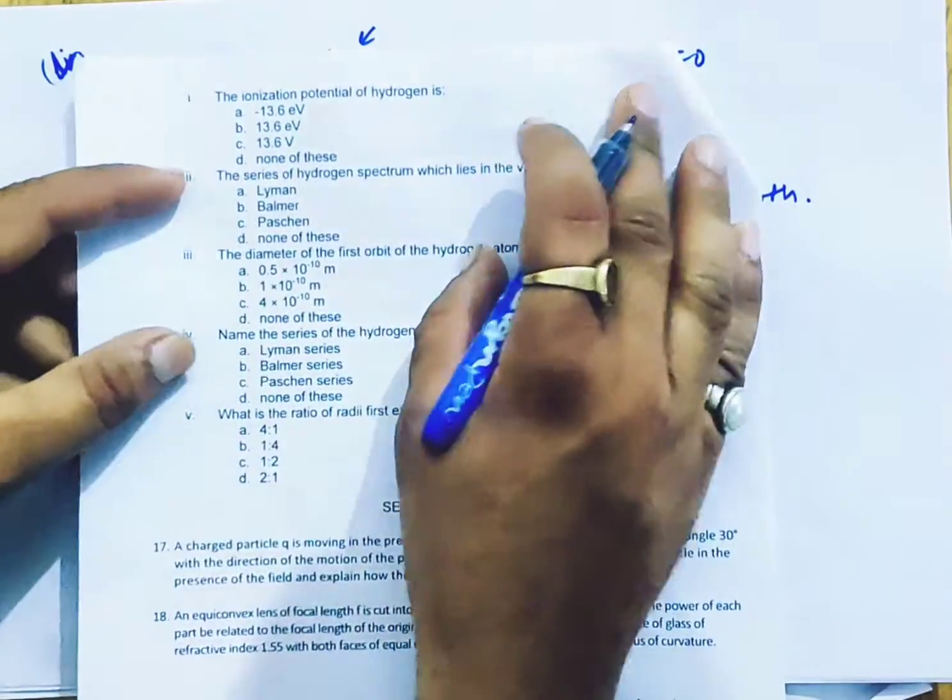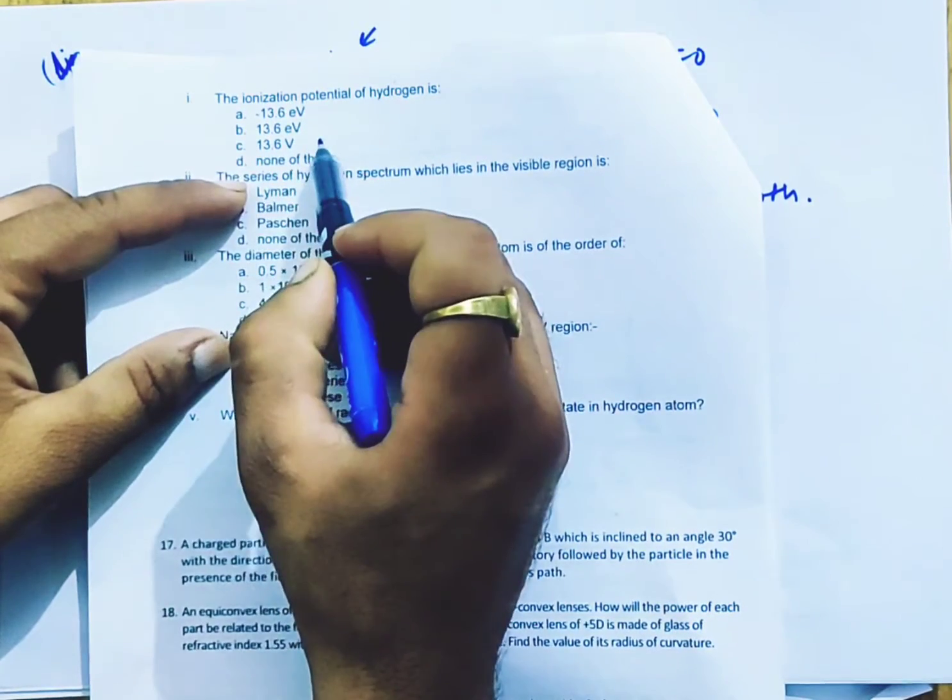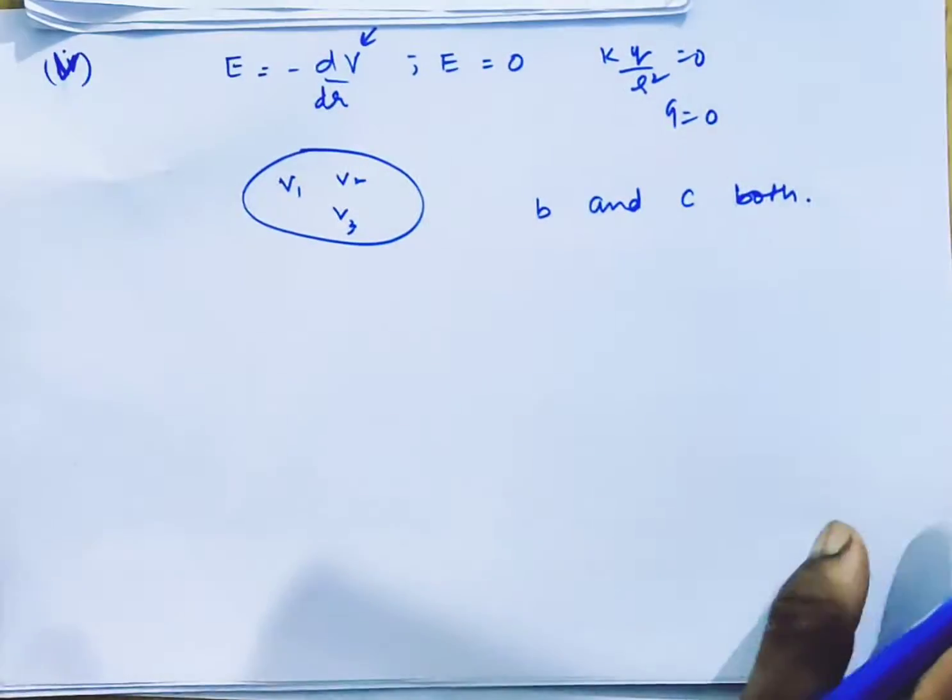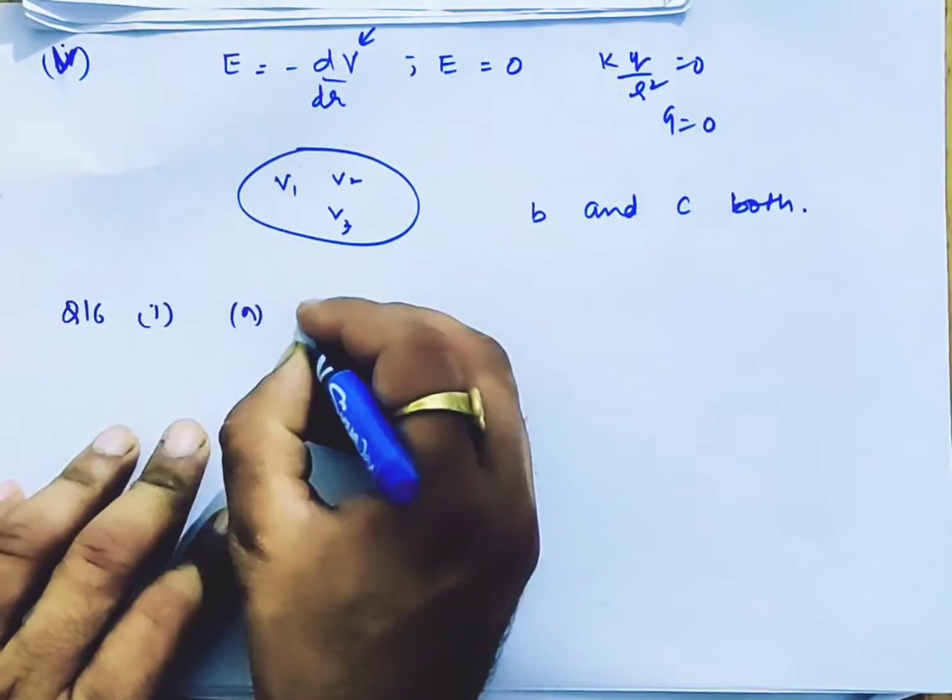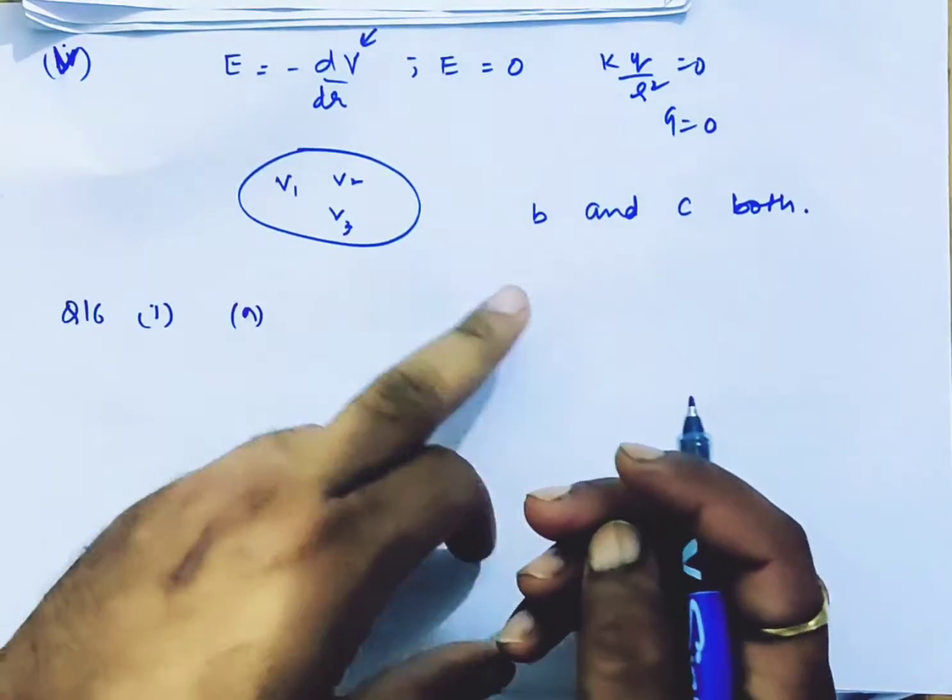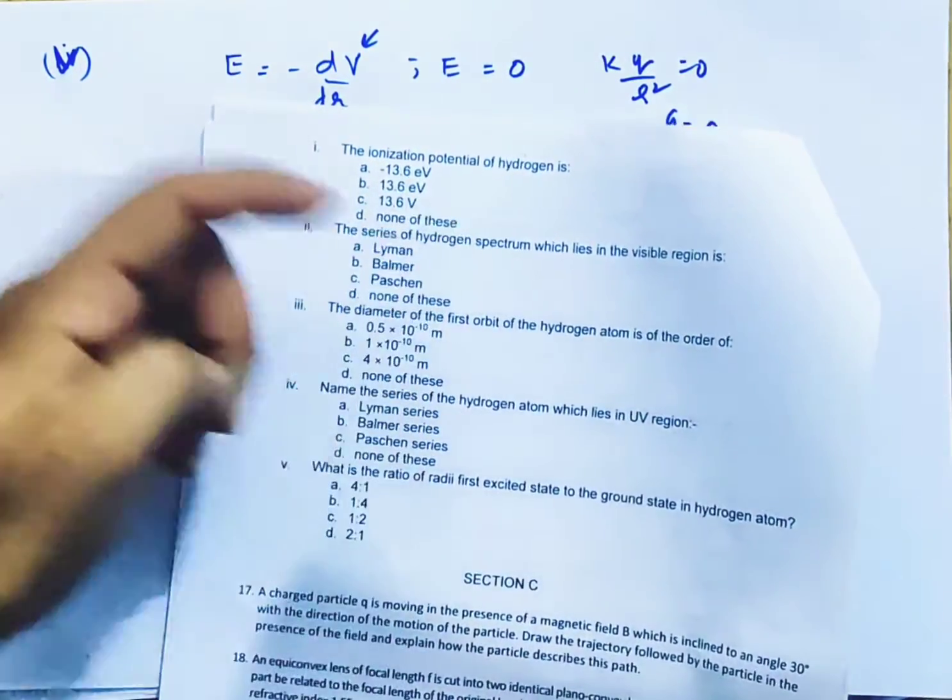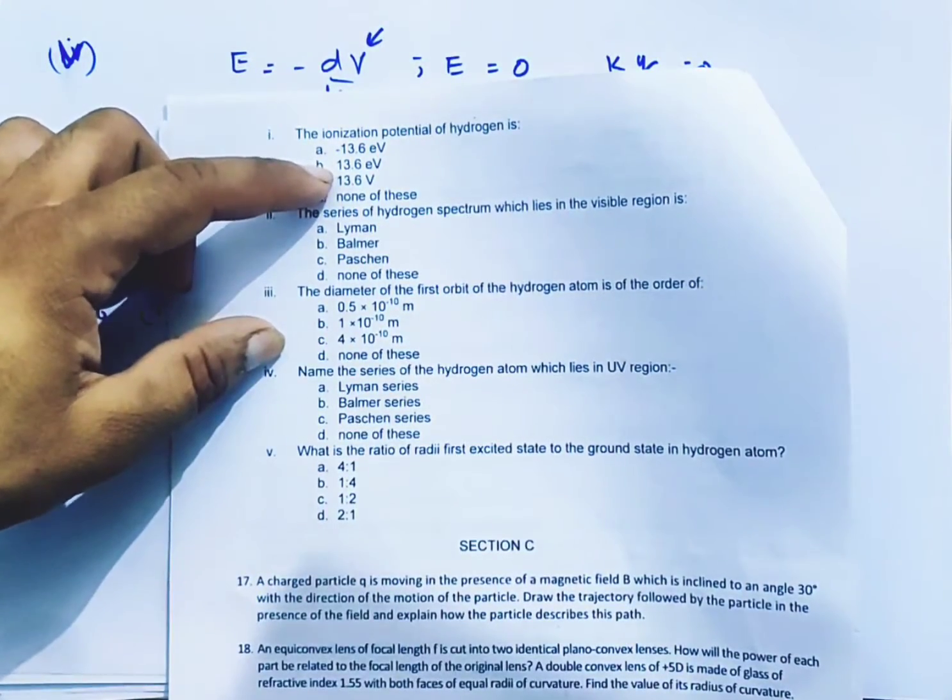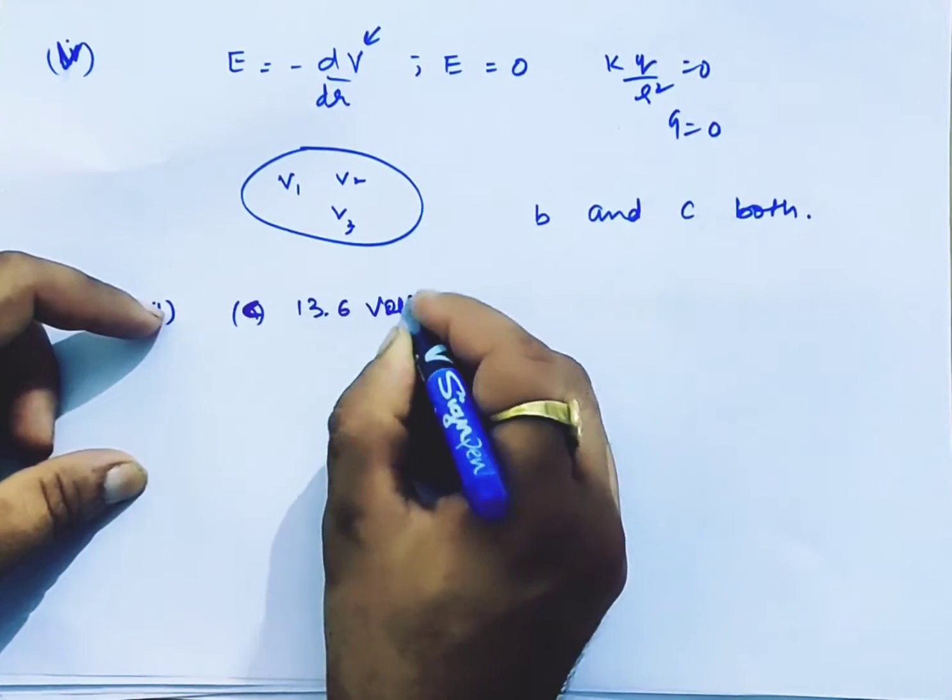The ionization potential of hydrogen is minus 13.6, plus 13.6 electron volts, 13.6 volts, and none of these. Take the answer. Question 16. The answer is 13.6 volts. Finished.